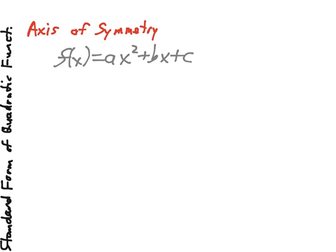finding our axis of symmetry is going to involve a formula. Our axis of symmetry is going to be where x equals the opposite of b divided by 2a.